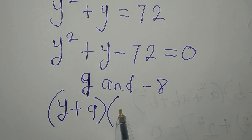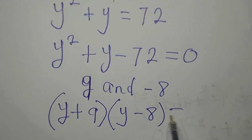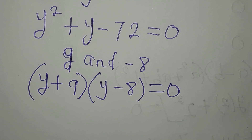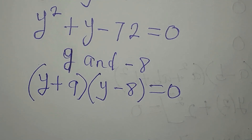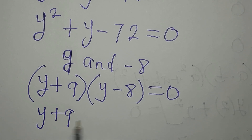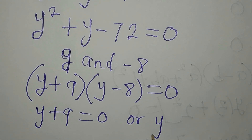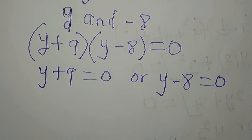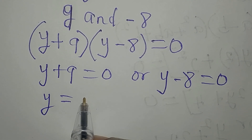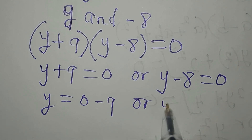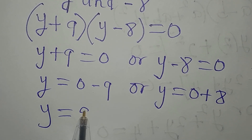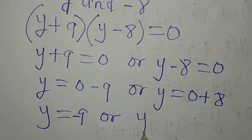To factorize, we have (y plus 9) in the first bracket and (y minus 8) in the second bracket, equal to 0. Applying the zero product rule — since the product equals 0, one of these factors must be 0 — we get y plus 9 equals 0 or y minus 8 equals 0. Solving, y equals minus 9 or y equals 8.